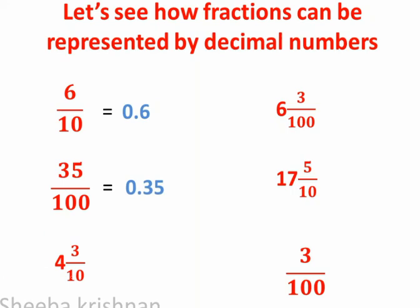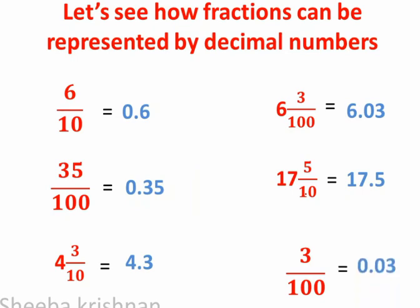And the next one: 4 and 3 by 10. So when we write as decimal, the whole number is 4, so 4.3. And here 6 and 3 by 100 — it will be 6.03. The next one: 17 and 5 by 10 — it will be 17.5. And the next one: 3 by 100 — it will be 0.03.